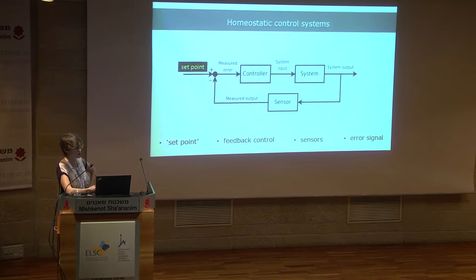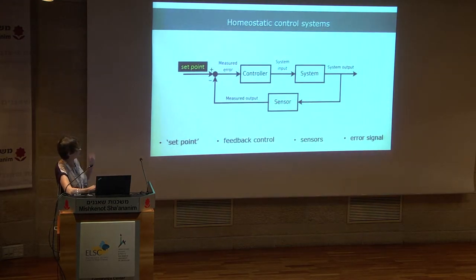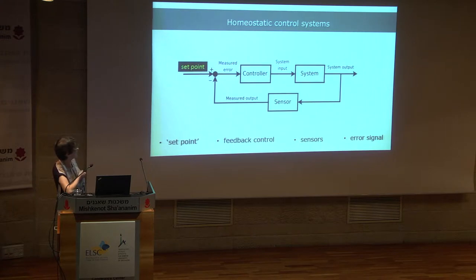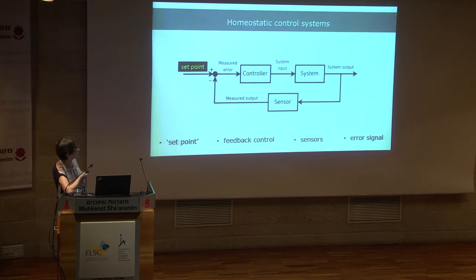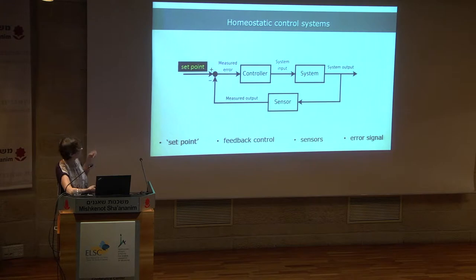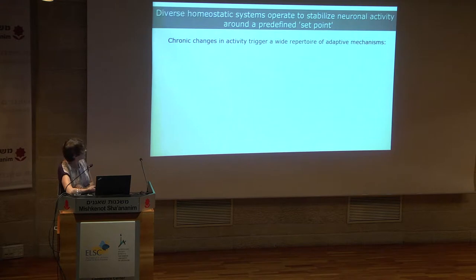The principle of a homeostatic control system is really very simple. The system has a set point, and in order to maintain critical properties of the system around that set point, we have a controller, a sensor, and a feedback control system that sends an error signal. This error signal tells the controller to change a parameter and adjust it to return to the set point.